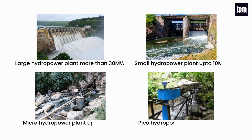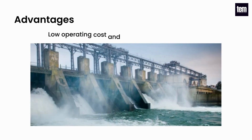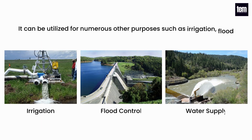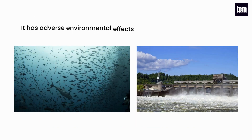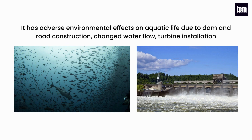The size of hydropower plants can vary: large hydropower plants are more than 30 megawatts, small hydropower plants up to 10 megawatts, micro hydropower plants up to 100 kilowatts, and pico hydropower plants up to 5 kilowatts. Advantages: low operating cost and requires less maintenance. It can be utilized for numerous other purposes such as irrigation, flood control, and water supply. Disadvantages: building the initial infrastructure is quite expensive. It has adverse environmental effects on aquatic life due to dam and road construction, changed water flow, and turbine installation.